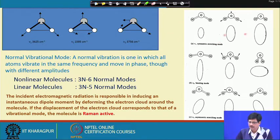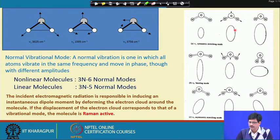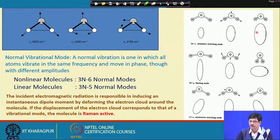Looking at this diagram from the fundamental textbooks, the water molecule's 3 different vibrational states can be explained. Corresponding to nu-1, that is symmetric stretching, the ellipse is either contracting or expanding — this same molecule of water is undergoing symmetric stretching, either compression or extension.